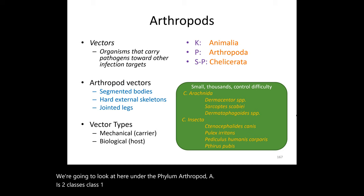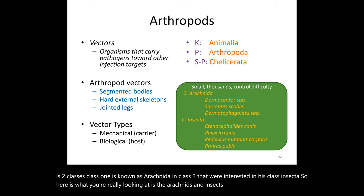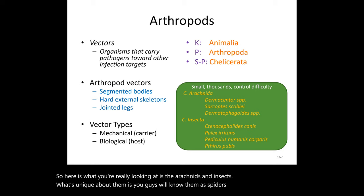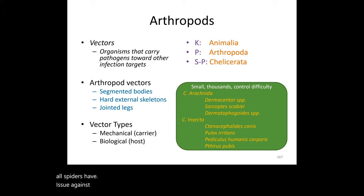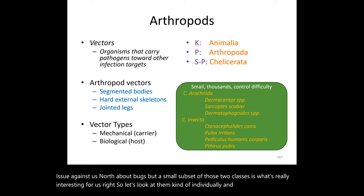The two classes we're examining are Arachnida and Insecta — essentially arachnids and insects. Most people know them as spiders and bugs. Not all spiders or bugs pose a threat to us, but a small subset of each class is what's really interesting in microbiology.